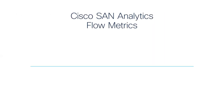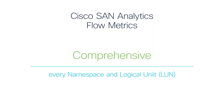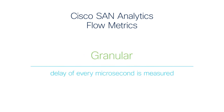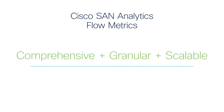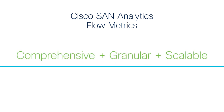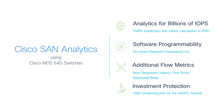Overall, Cisco SAN analytics gives you comprehensive visibility at a namespace or logical unit level, with microsecond granularity and seamless scale — all at the same time, with no compromises. Using the 64-gigabit MDS switches, you get visibility into billions of IOPS, newer metrics, and outstanding investment protection.